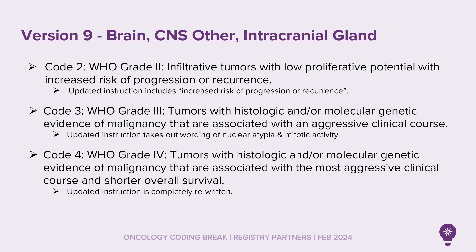Code 4, WHO grade 4: tumors with histologic and/or molecular genetic evidence of malignancy that are associated with the most aggressive clinical course and shorter overall survival. These instructions have been completely rewritten for code 4. These are updated notes for all the grades — clinical, post-therapy clinical, pathological, and post-therapy path — for version 9, brain, CNS other, and intracranial gland.